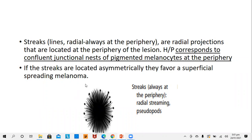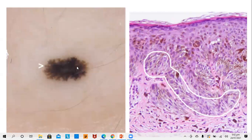Another pattern in dermoscopy are the streaks or lines. These give a starburst appearance and these lines are radially oriented with pseudopods at the periphery. Histopathologically they correlate with confluent junctional nests of pigmented melanocytes at the periphery of the main tumor. You can see this starburst pattern and on histology these are the melanocytes seen at the periphery of the main lesion.